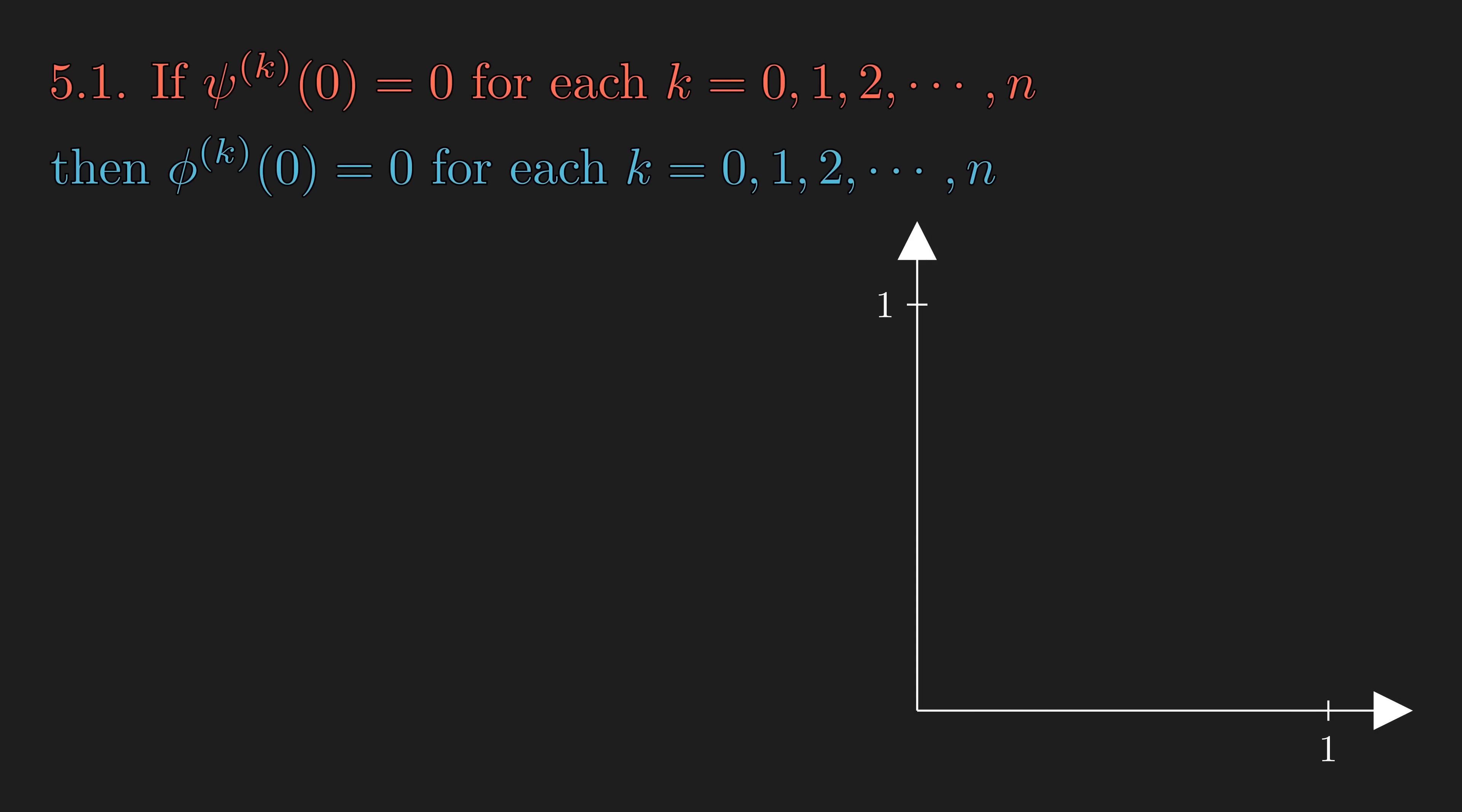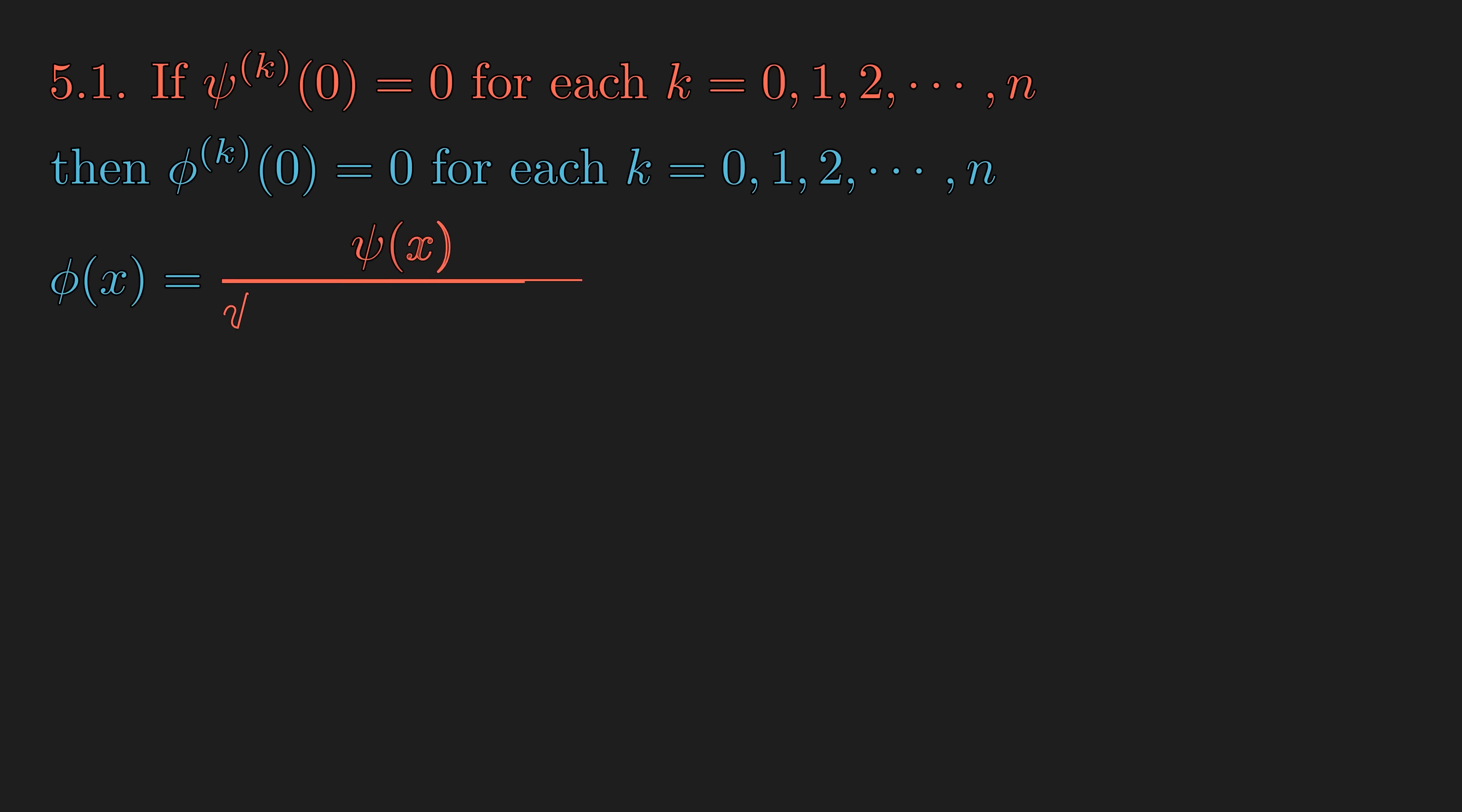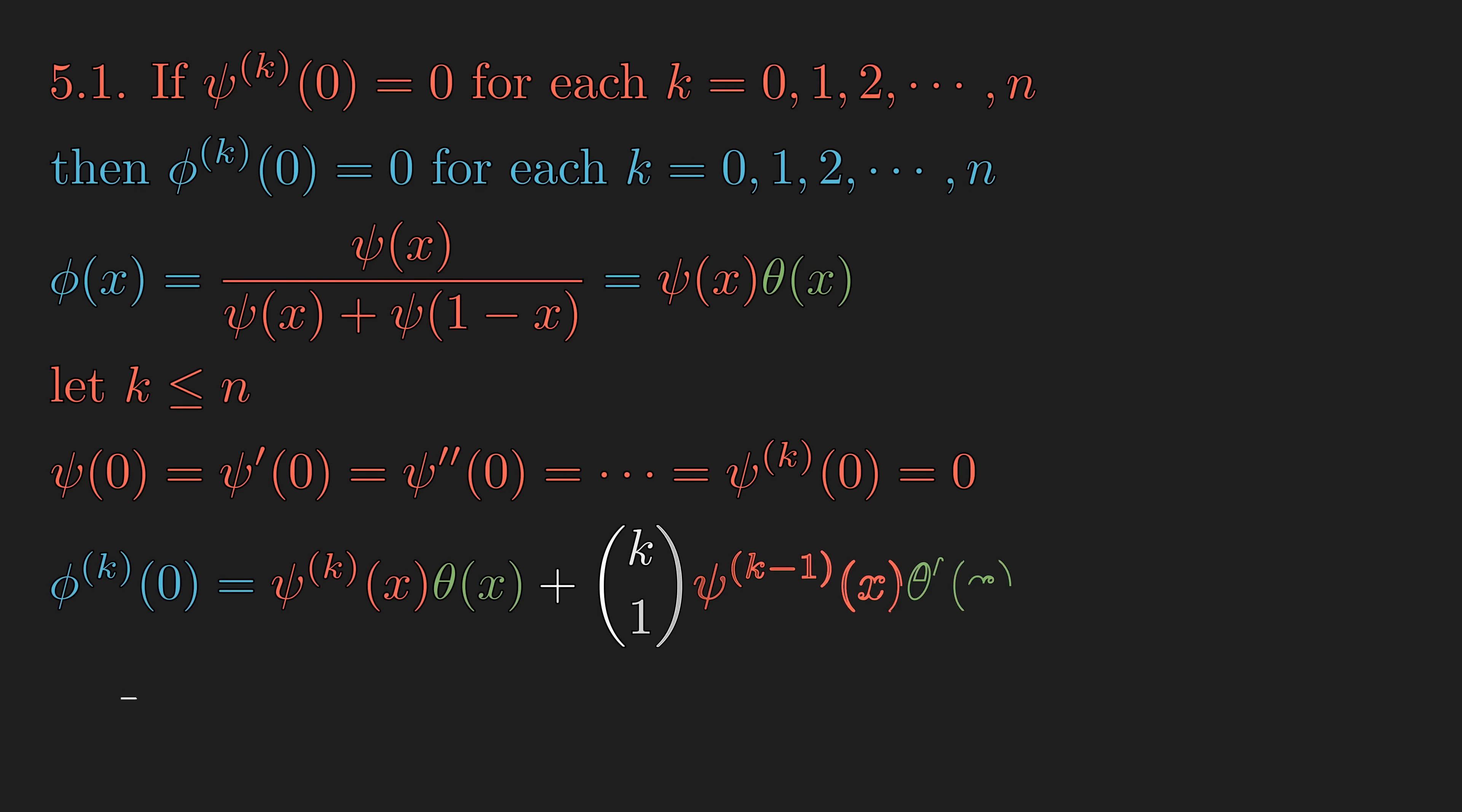The most important fifth property says that if the kth derivative of psi at 0 is equal to 0 for all k less than or equal to n, then all kth derivative of phi of 0 is also equal to 0. This one is a particularly useful property, since it tells us that the local behavior of phi at 0 is almost identical to the local behavior of psi at 0. And furthermore, by the symmetry property, all the derivatives of phi at 1 for k from 1 to n is also equal to 0. And this allows us to create a step function of arbitrary smoothness much more efficiently than using Hermite polynomials. In order to see that this property holds, we can let the denominator part of phi to be theta, which is a smooth function since the denominator never equals 0. And for any k less than or equal to n, the kth derivative of phi can be written as a linear combination of derivatives of order less than or equal to k of psi, which are all individually equal to 0. So, kth derivative of phi at 0 is equal to 0.